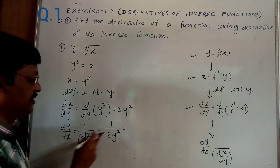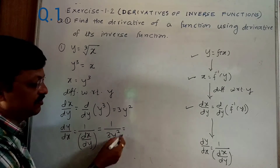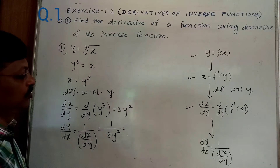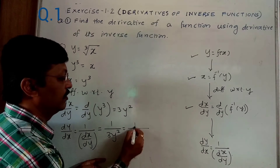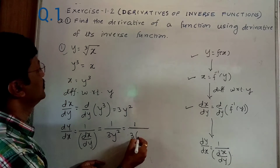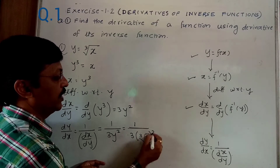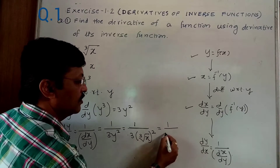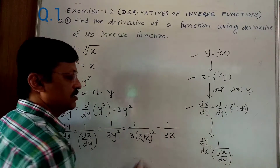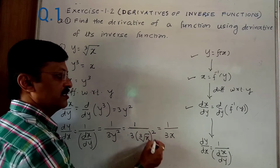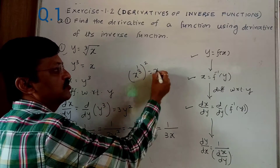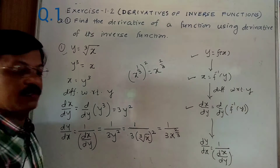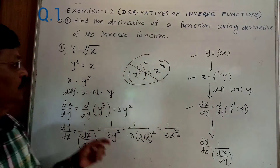The last step is to write dy/dx = 1/(3y²) in terms of x. Since y = cube root of x, we substitute: 1/(3 × (cube root x)²) = 1/(3 × x^(1/3)²) = 1/(3x^(2/3)). So dy/dx = 1/(3x^(2/3)). We were given y = cube root x, wrote the inverse x = y³, differentiated to get dx/dy = 3y², then found dy/dx = 1/(3x^(2/3)).